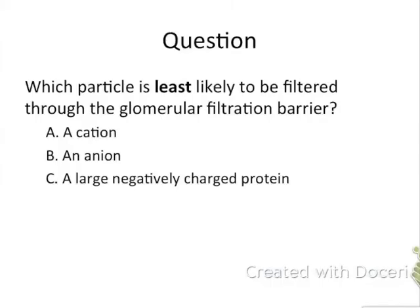Quick question: what particle is least likely to be filtered through the glomerular filtration barrier? A — a cation; B — an anion; or C — a large negatively charged protein. The answer is C. The trilaminar membrane is negatively charged and repels charged proteins, and large things such as proteins cannot make it through the basement membrane.